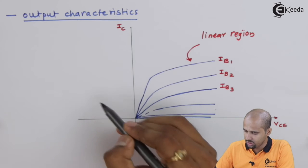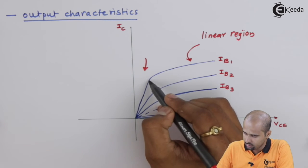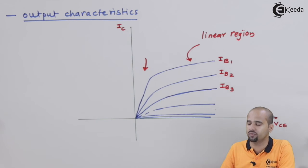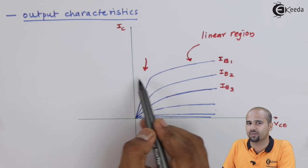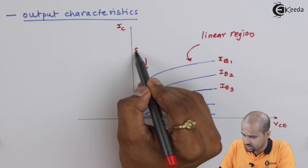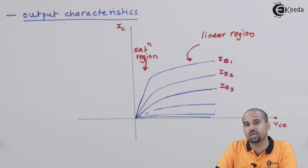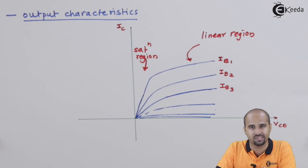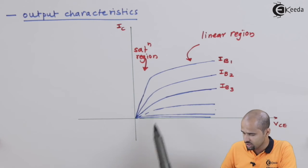In the saturation region, the current is very high relative to the voltage, so the ratio of current to voltage — the slope — is very very high. The voltage is low and the current is high compared to the voltage. Don't confuse this with the linear region, where we actually obtain more current overall.